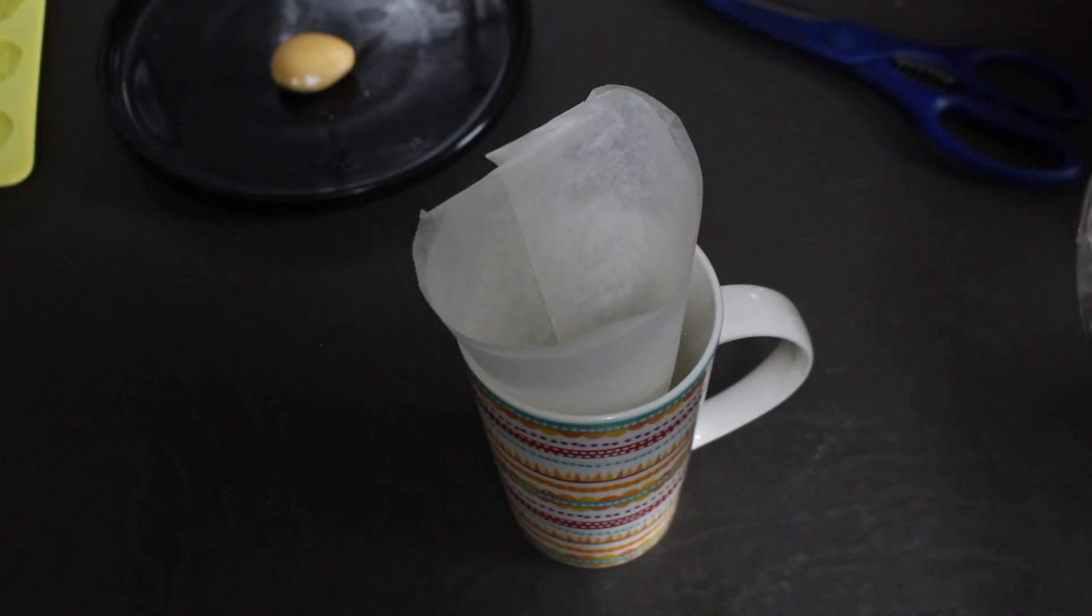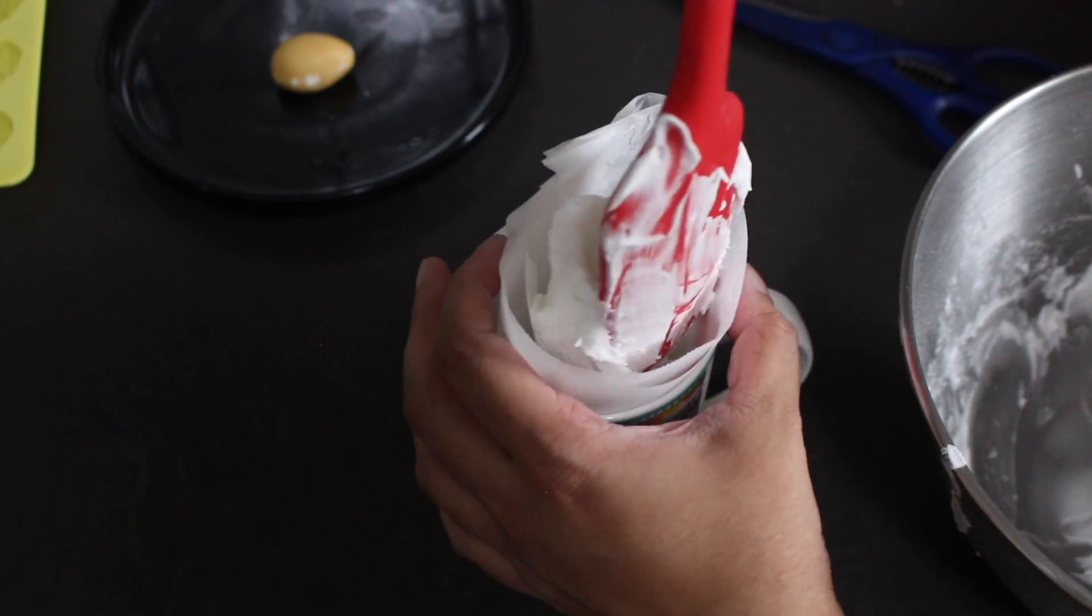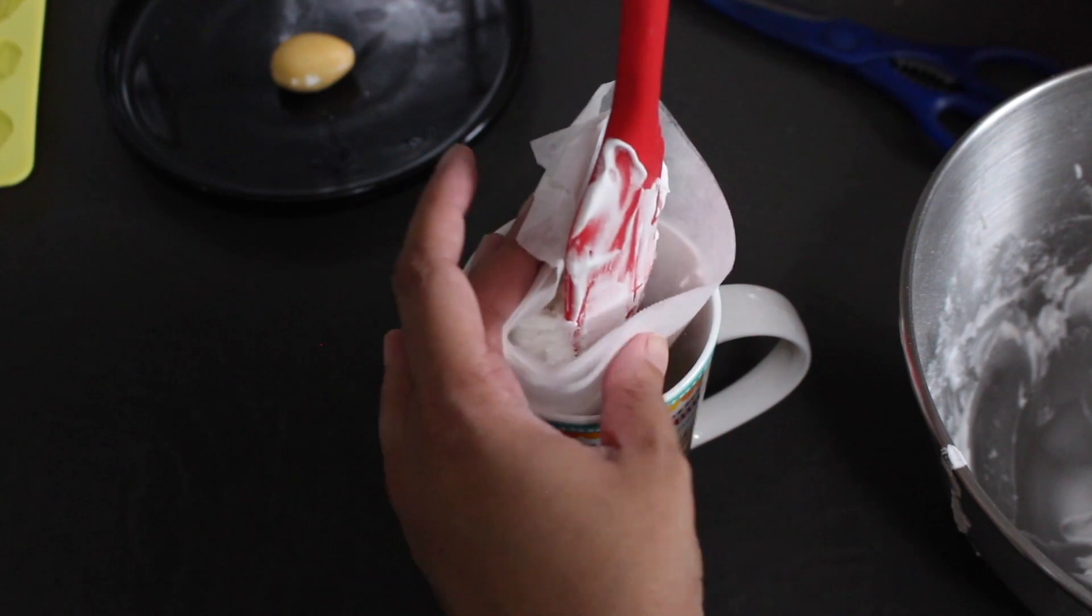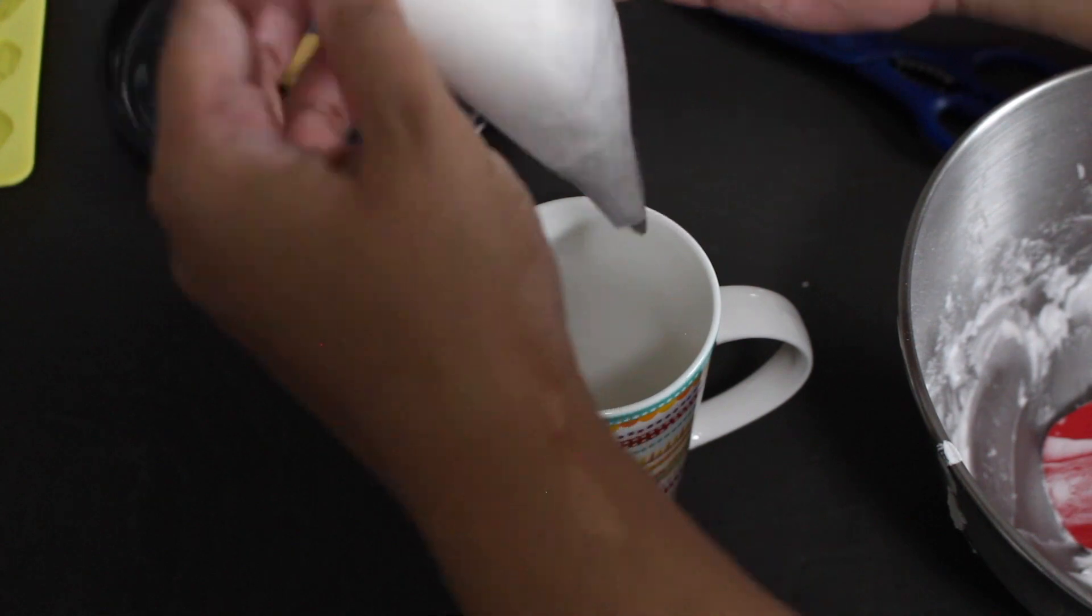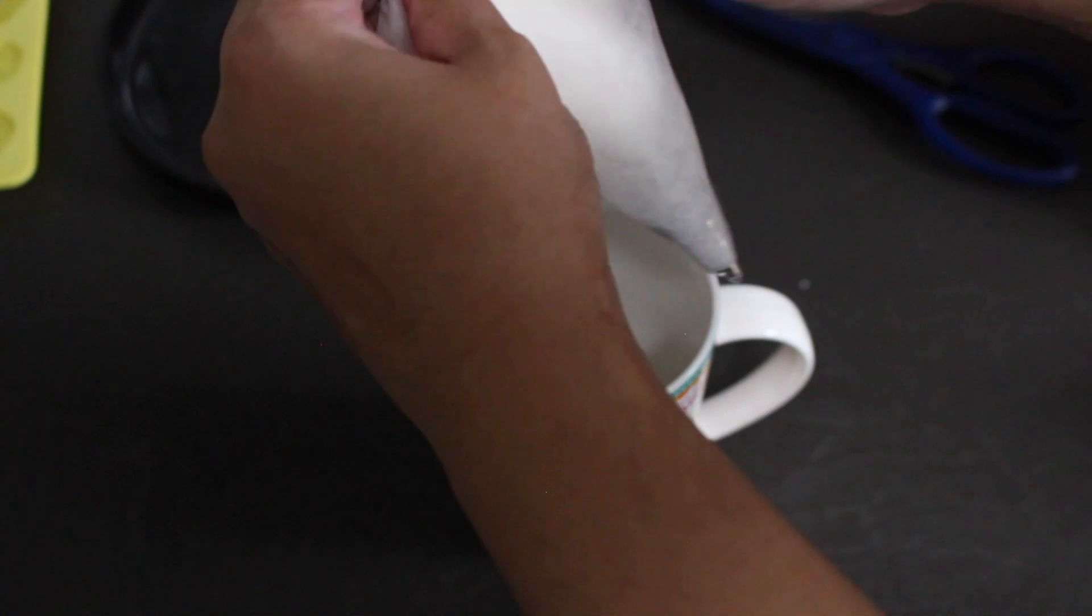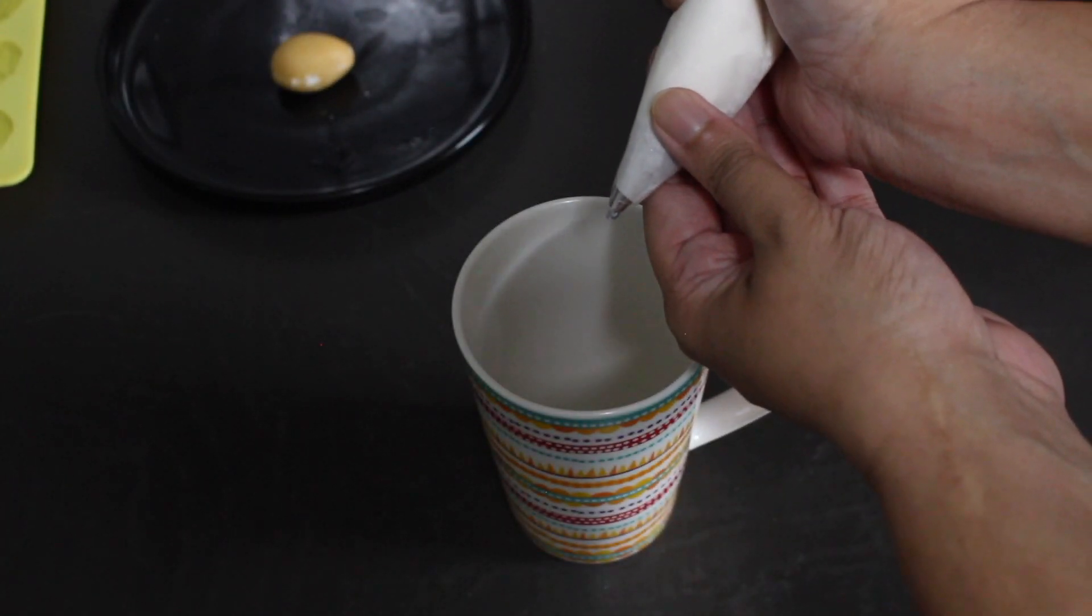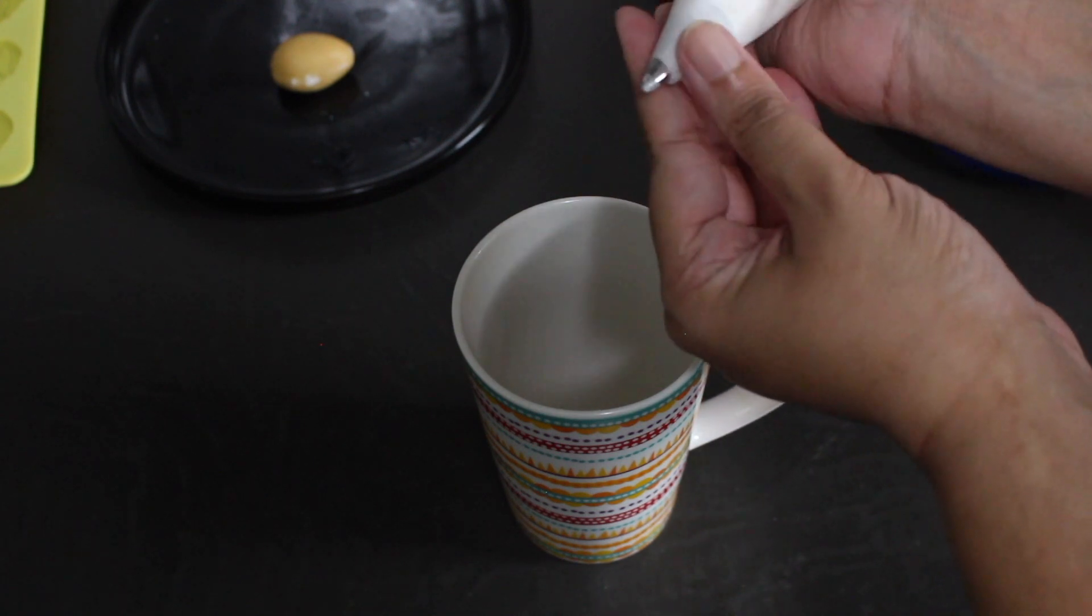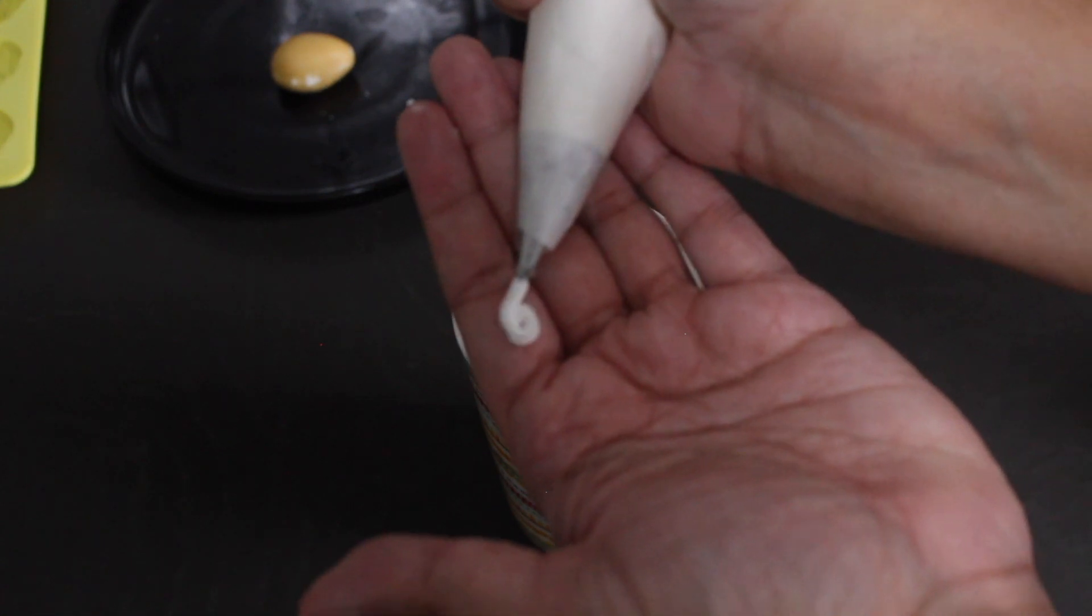Sit your piping bag in a tall glass and carefully drop your icing in there. Once your icing is in there, you're going to make sure that that top end is secure. I like to keep the seam on the back over here. And you're going to push the icing ever so gently till you can feel it come through the nozzle. There we go.